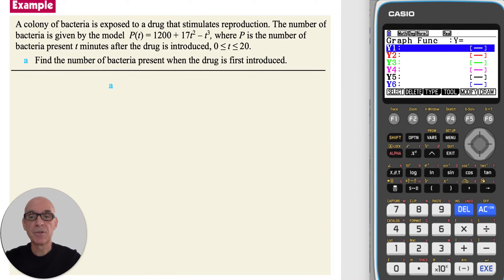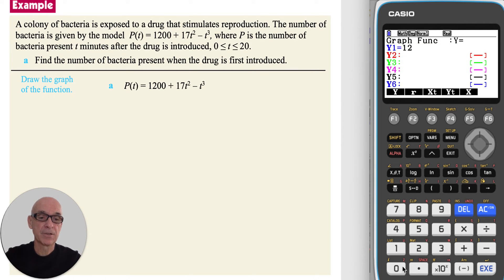In part a of this question, we're asked to find the number of bacteria present when the drug is first introduced. Beginning by drawing the graph of the function. So into y1, I'm going to type 1200 plus 17, and I'm going to press the x variable button to represent t, and then the square button, and then take away, and then pressing the x button again, and then raising that to the power of 3. Pressing execute to enter the equation.